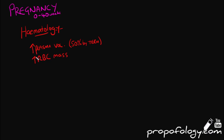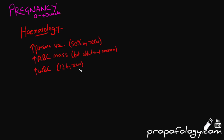The first thing to note is there is an increased plasma volume, which increases preload to the heart and the volume of distribution of polar drugs. It's increased by about 50% at term. There's also an increase in red blood cell mass, but because the plasma volume increases more than the red blood cells, this causes a physiological or dilutional anemia.